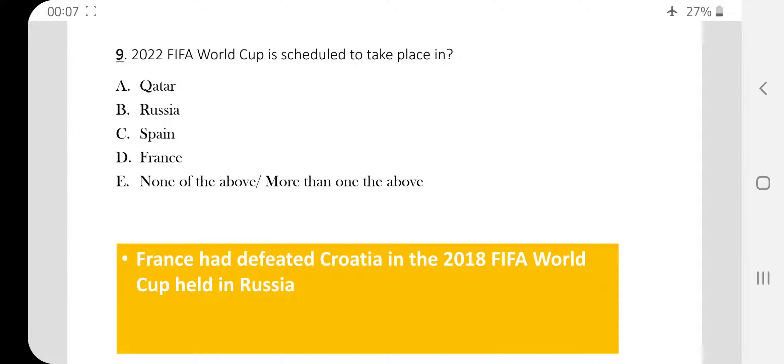Question number nine. 2022 FIFA World Cup is scheduled to take place in option A, Qatar. Last time 2018, the FIFA World Cup was held in Russia. France became champion, defeating Croatia.